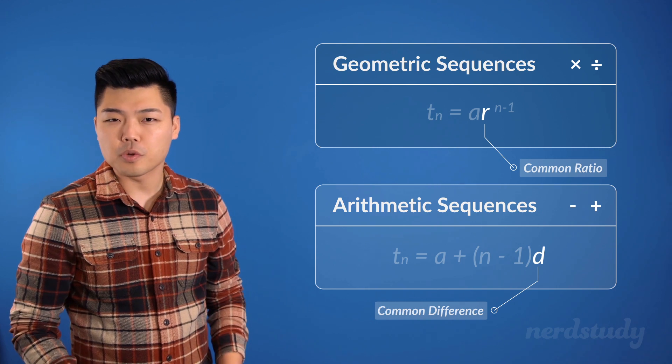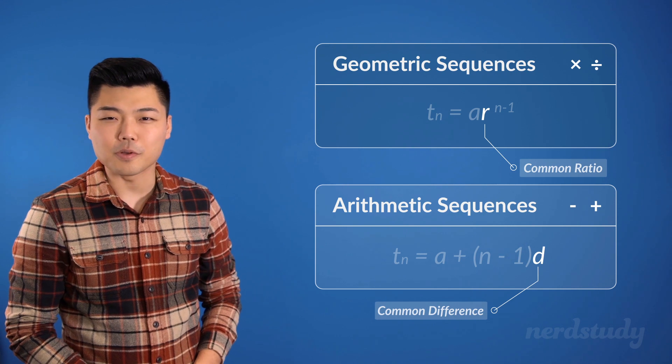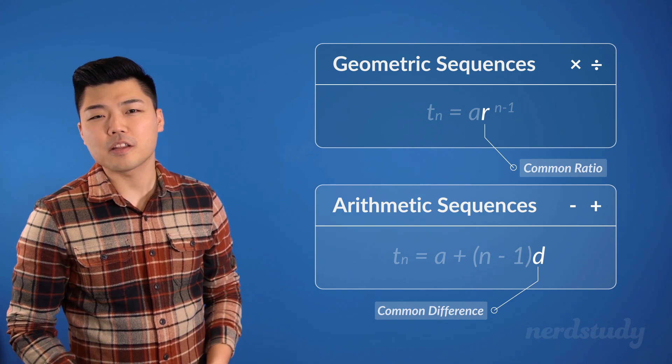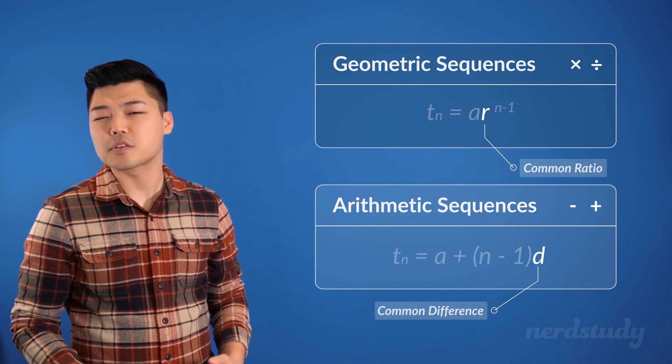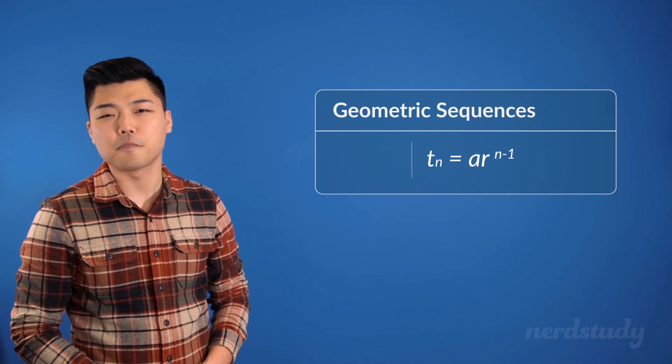A common ratio is the ratio of any two consecutive terms in a geometric sequence. We'll take a look at an example shortly to make things clearer. But for now, the general formula for geometric sequence is the following: